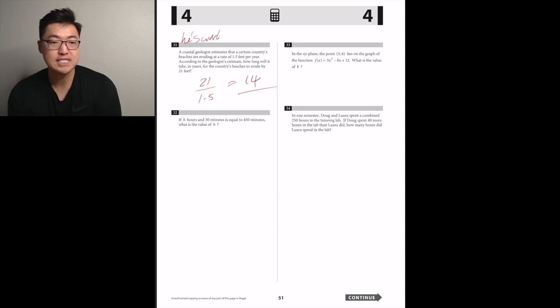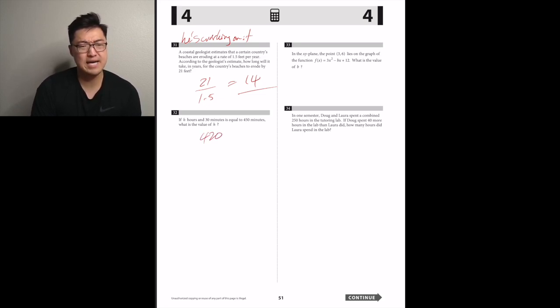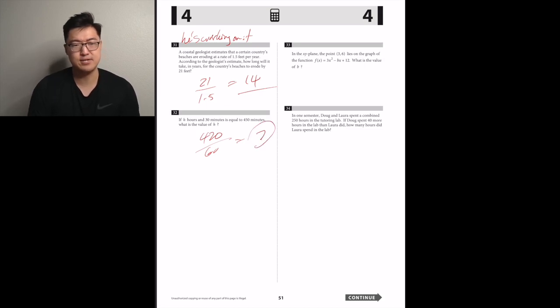If h hours and 30 minutes equals 450 minutes, what's the value of h? So h hours equals 420 minutes, and that's 7.